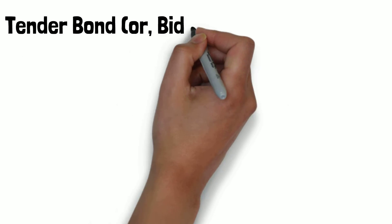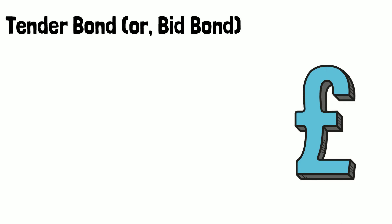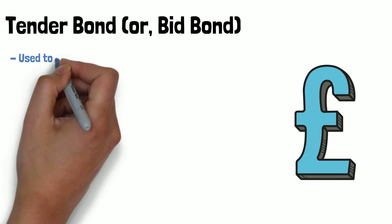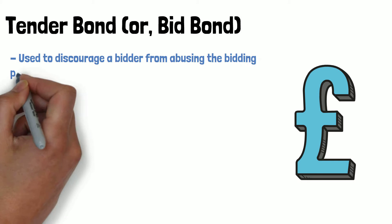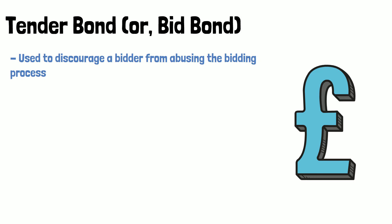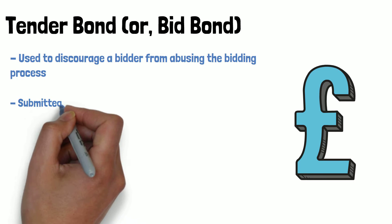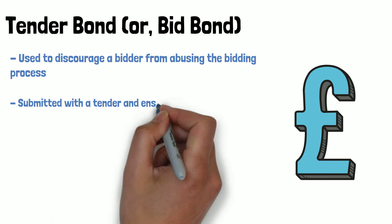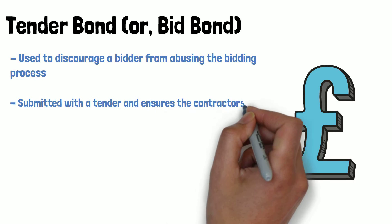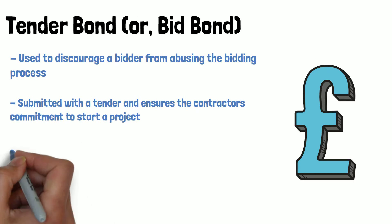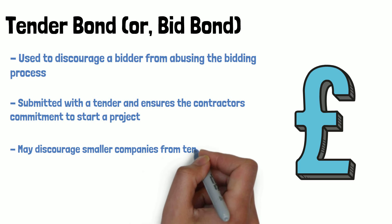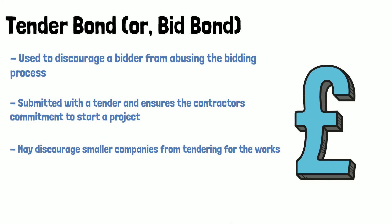Next we have the tender bond or bid bond. The purpose of a tender bond is to discourage the bidder from abusing the bidding process. The tender bond is submitted with a tender and ensures the contractor's commitment to start a project. The downside to this bond is it may discourage smaller companies from tendering for the works.